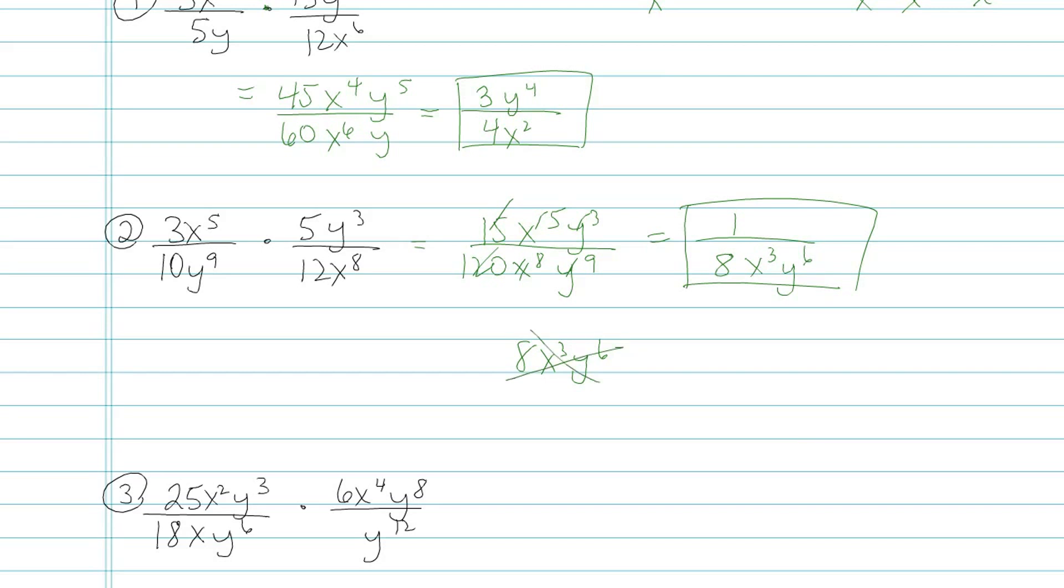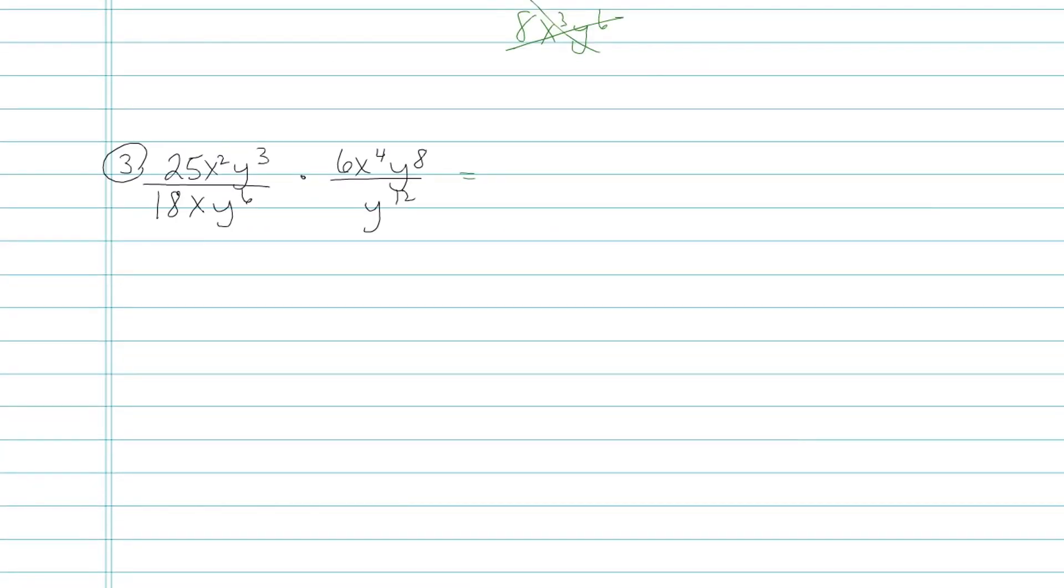Last but not least, number 3. So I sure could use that same strategy, multiply across the top, multiply across the bottom and reduce, but I'm going to end up with some bigger numbers. So what I want to do instead is reduce each fraction separately. The first one, I noticed 25 over 18 don't have any common factors, so I'll leave that as 25 over 18. But for the x's here, I have x squared on top of x. And then for the y's, I have y to the third on top of y to the sixth. There's my first fraction simplified.